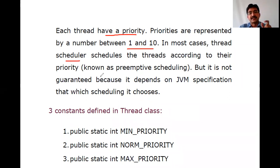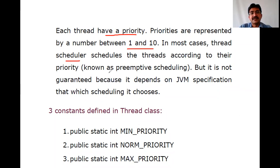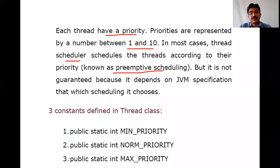For example, if you have 10 threads — Thread 1 with priority 3, Thread 4 with priority 5, Thread 6 with priority 8 — the highest priority thread will be picked for execution. Thread Scheduler schedules threads according to their priority, and this process is called Preemptive Scheduling.